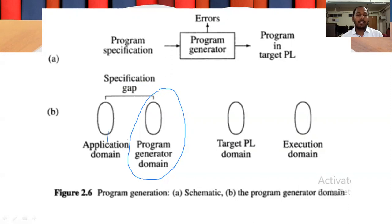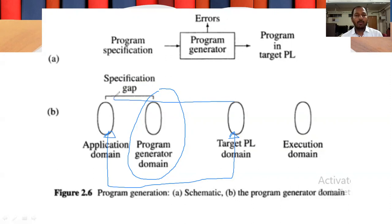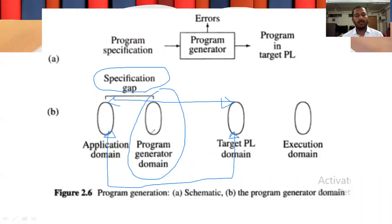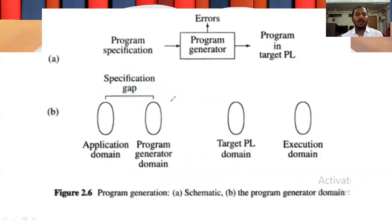Because of this new domain, the gap between application domain and target PL domain, which was more, is now reduced. The specification gap, which was from application domain to target PL domain, is now between application domain and program generator domain. There is also a real benefit of introducing the program generator domain beyond just the reduced distance between domains.